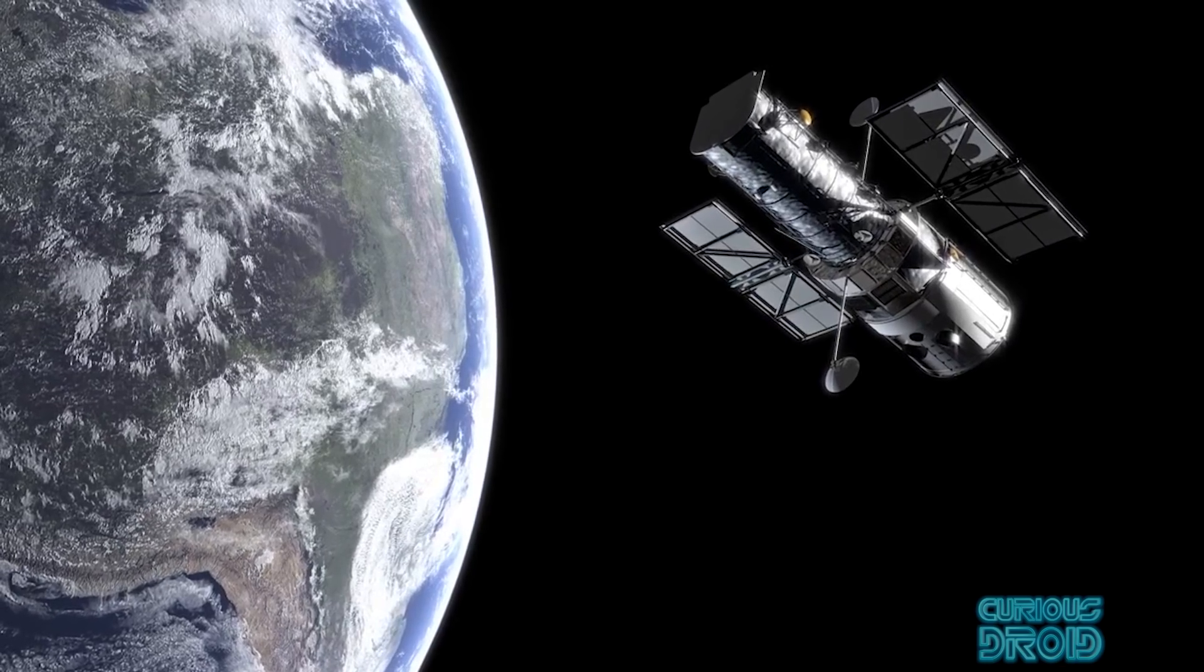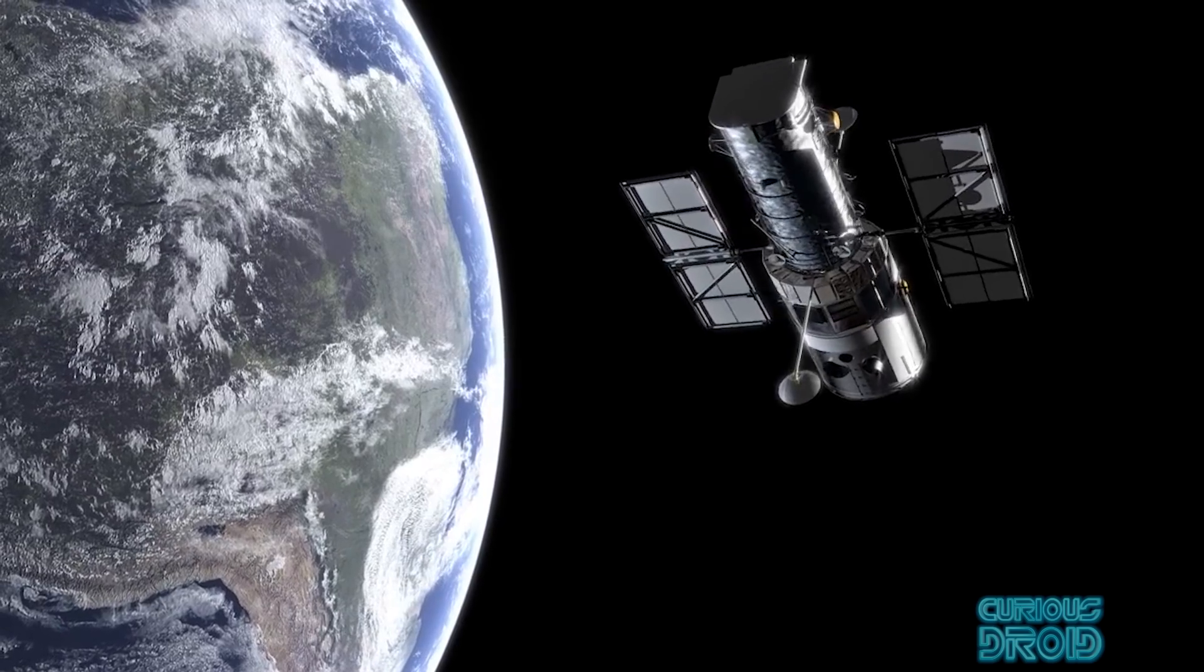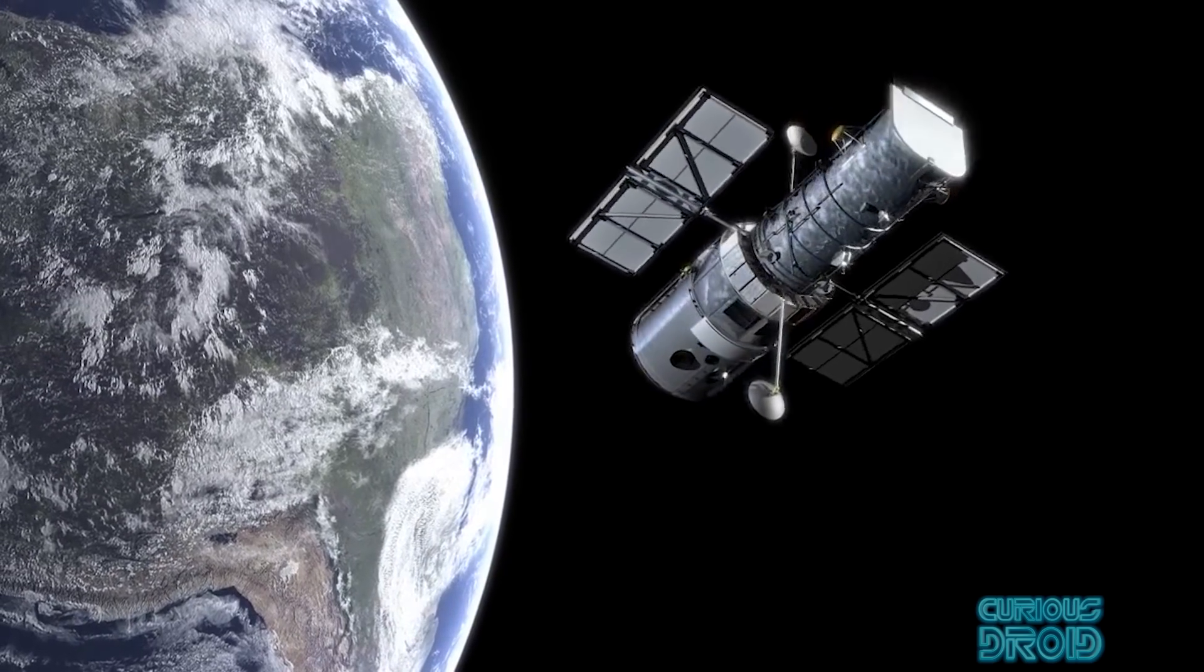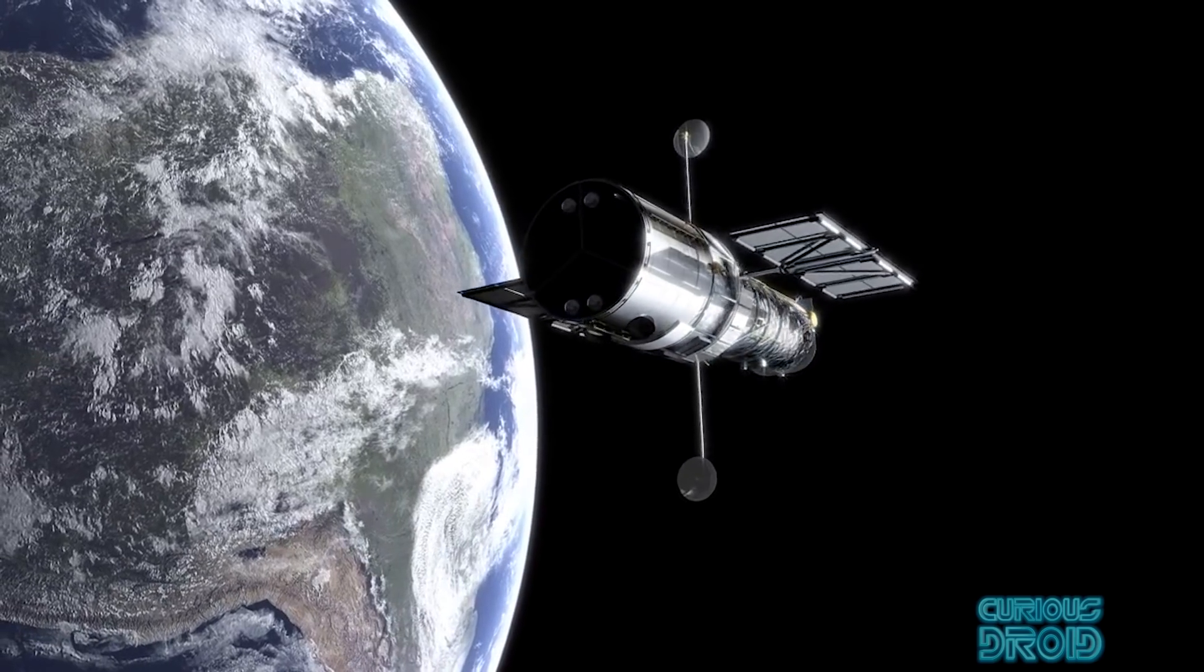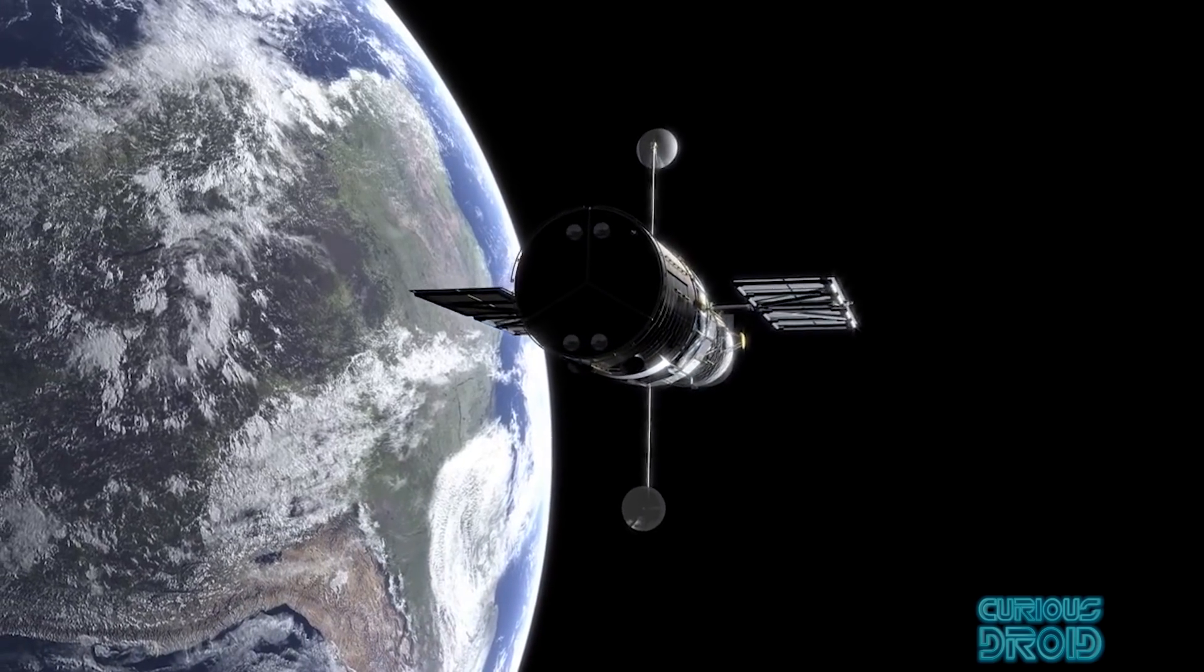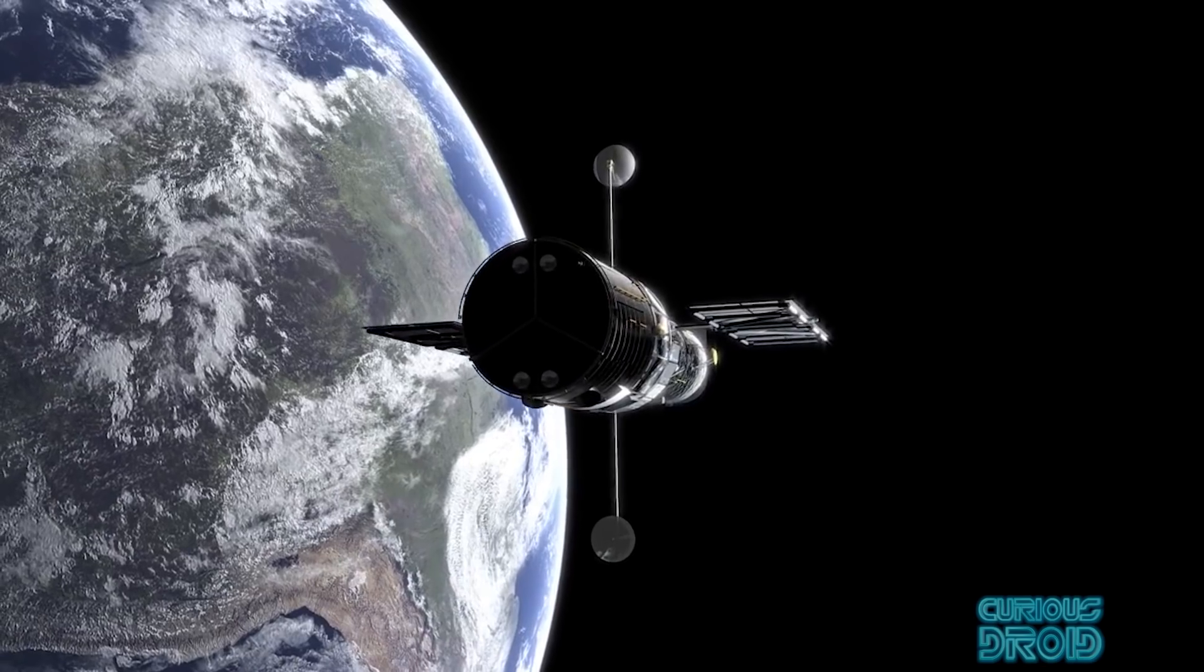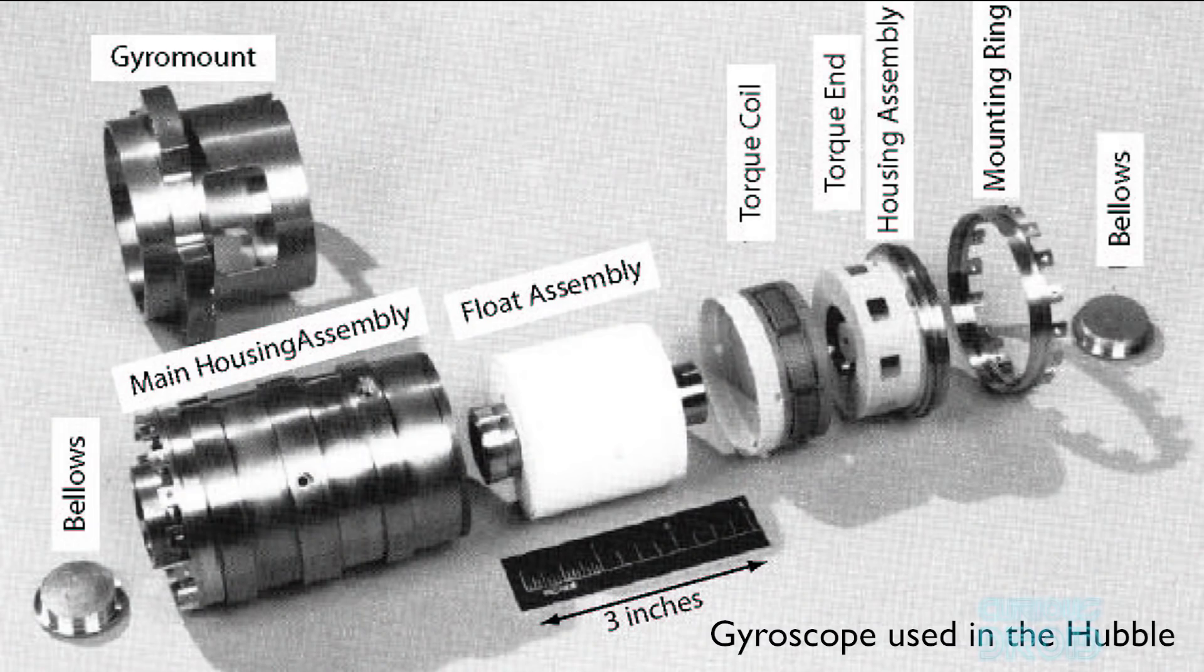On October 5th, 2018, Hubble went into sleep mode when one of its gyroscopes failed. These are devices which are used to help guide and keep its orientation in orbit. Although it does have six, four have now failed. Three of the six were an older design and that was to be expected, but this was one of the newer design ones.